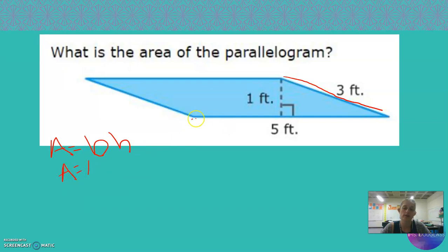I do know my base. That's 5. I'm going to add in a time symbol. My height forms that right angle. Notice this dotted line. It just means that's not a side. I'm just taking that line for a measurement. It's 1. And 5 times 1 makes 5.